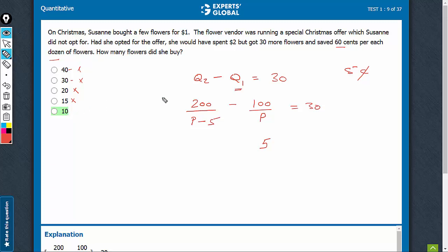And let's try 10. 200 upon 10 minus 5, 200 upon 5, which is 40 minus 100 upon 10. So, 40 minus 10 is equal to 30. So, 10 is a number which is satisfying, or you could have made it a quadratic equation and solved it. E is the right answer.